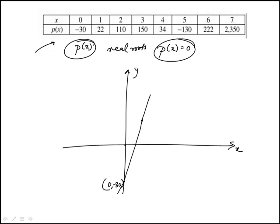At 2, 110. At 3, 150, and then at 4, it kind of decreases here. At 5 goes down to minus 130, and then at 6, again, it goes to positive 222, and then it increases.